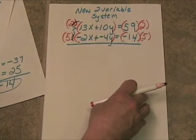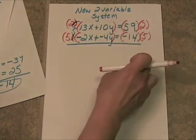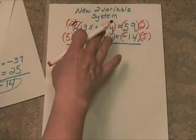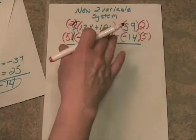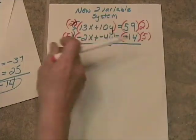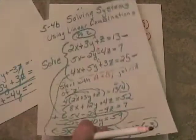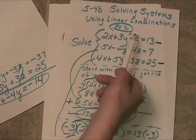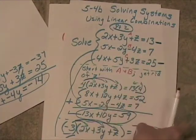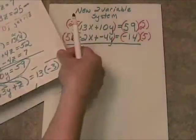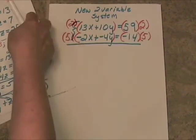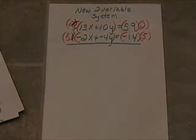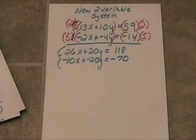Then I'll get two new equations and I'll be able to add those, and the y's will drop out. Then I'll have just x's — I can solve for x, then re-substitute in to get my y. And once I know my x and my y, I can go back to the original set of equations and solve for z. The key was just to get two equations and two variables. There's the new system.